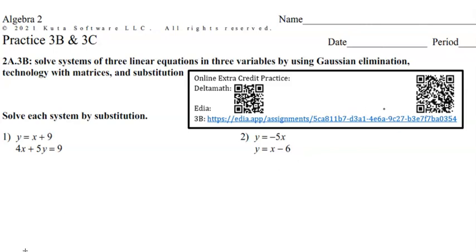Let's do these practice problems for practice 3B and 3C. You could also do the delta math assignment or the EDA assignment for 3B. All the delta math assignments for this unit would be any of the ones in the boxes that start with 3: 3A, 3B, 3C, and so on. If you skipped the notes from your booklet, be sure that you have written those down and ask any questions over the examples. So let's look at some of these problems.